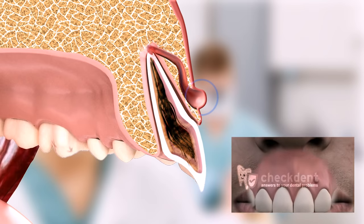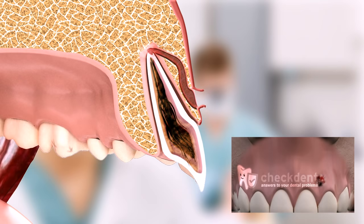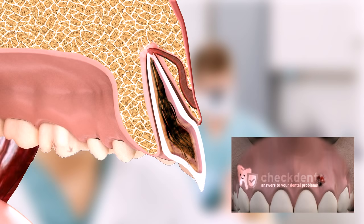A dental fistula is usually felt as a small elevation on the gums. When this elevation ruptures, pus empties out into the oral cavity and the elevation disappears, only to quickly fill up again. This process repeats itself, occasionally resulting in scarring of the existing pus canal. The walls around the pus canal get coated with special cells, following which the body isolates it. This eventually results in a fistula.